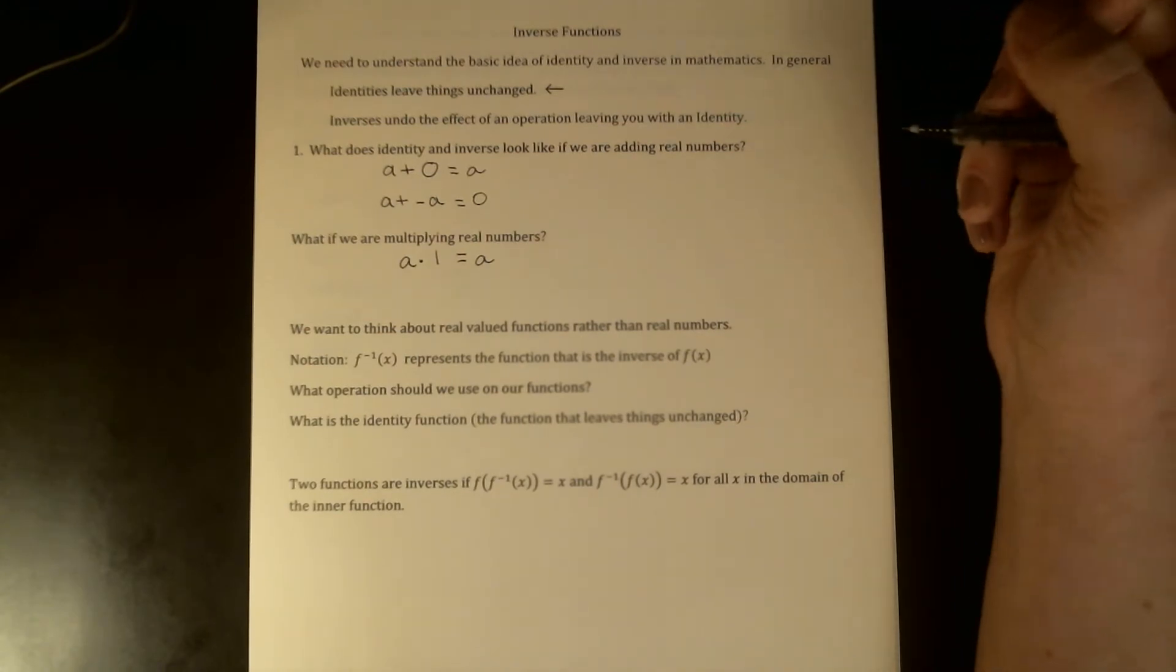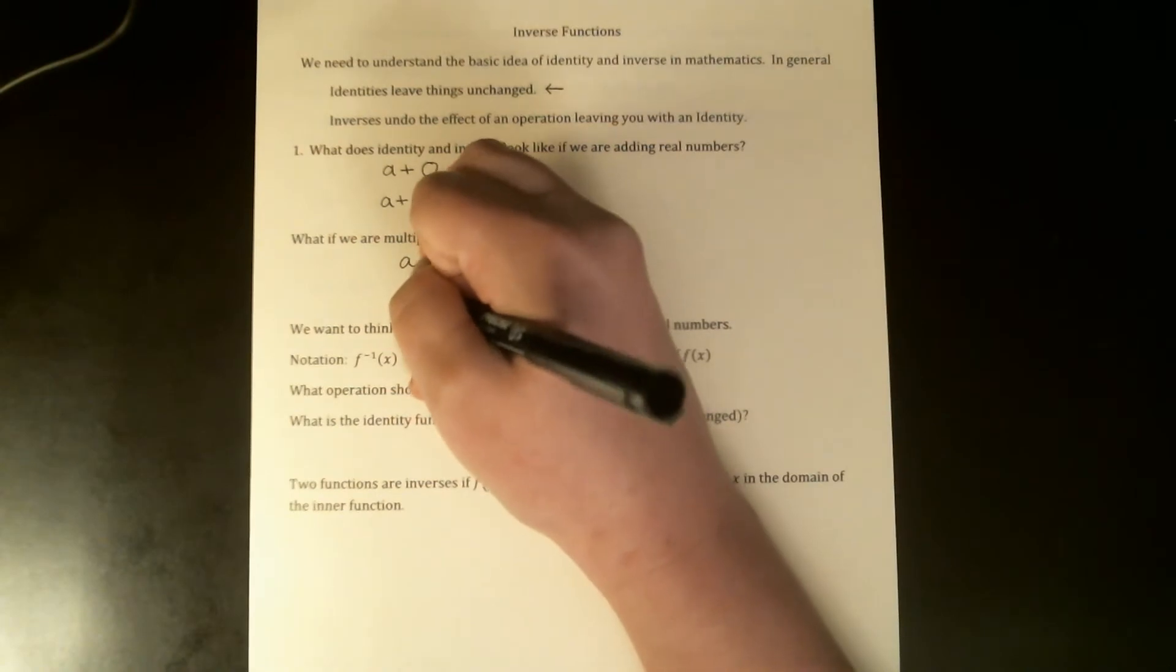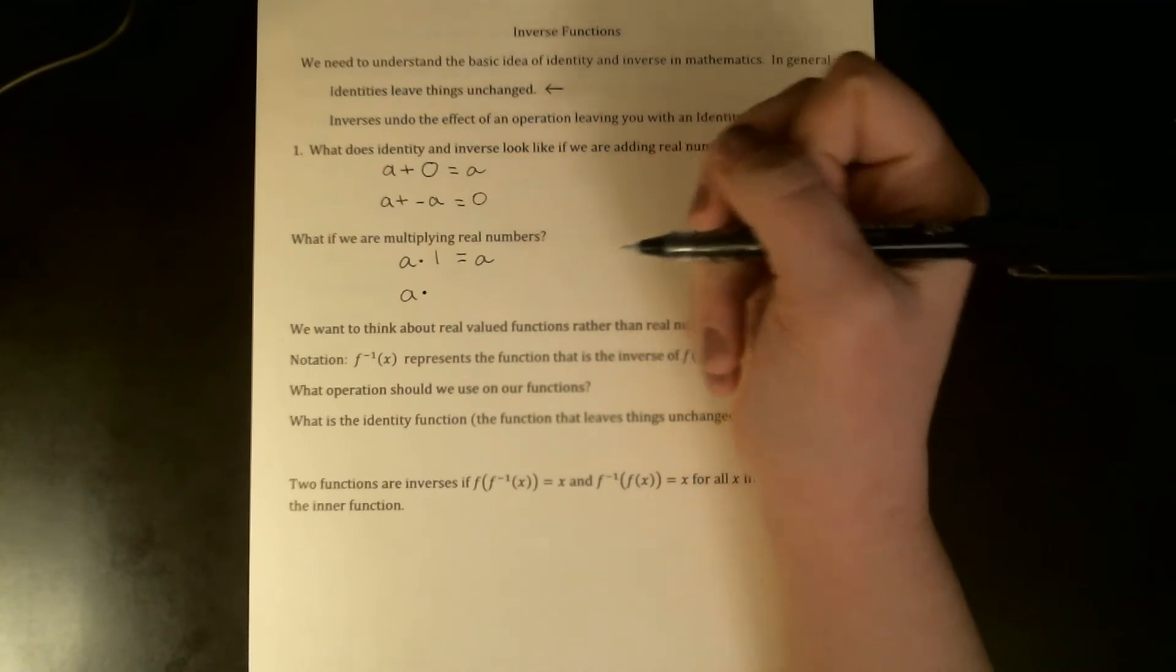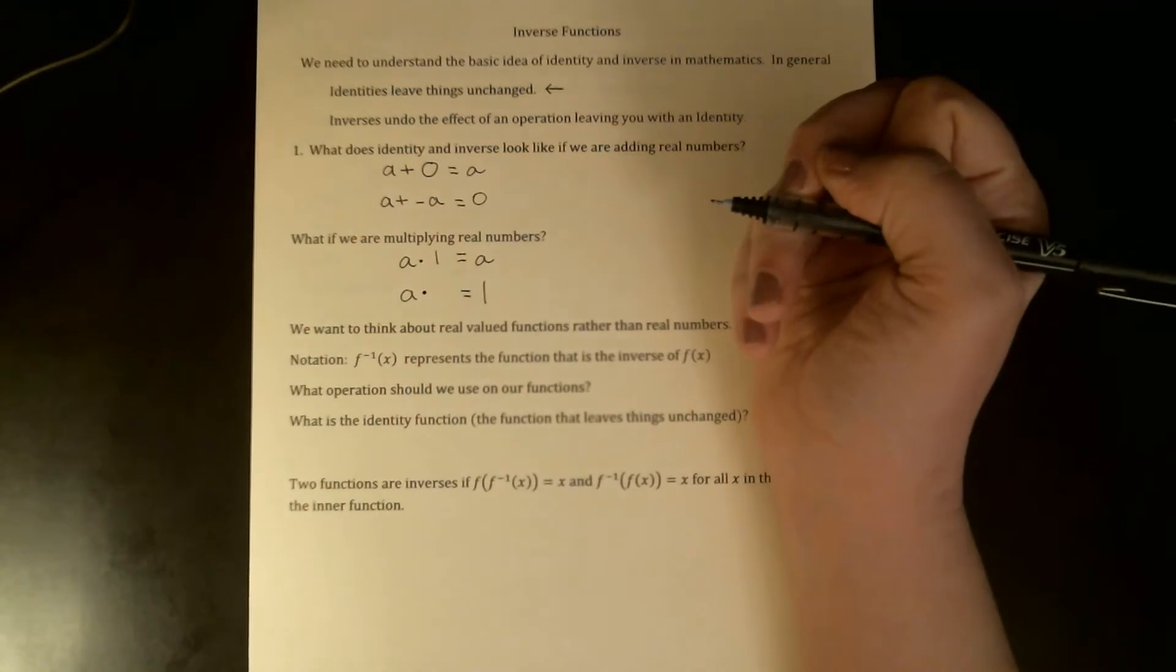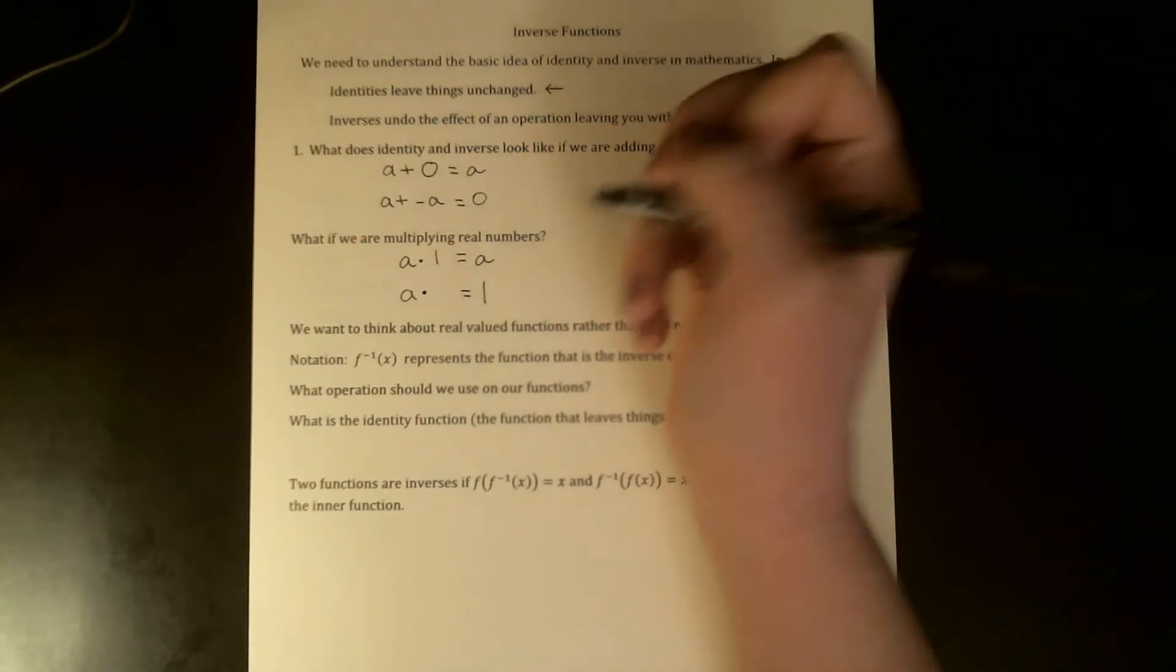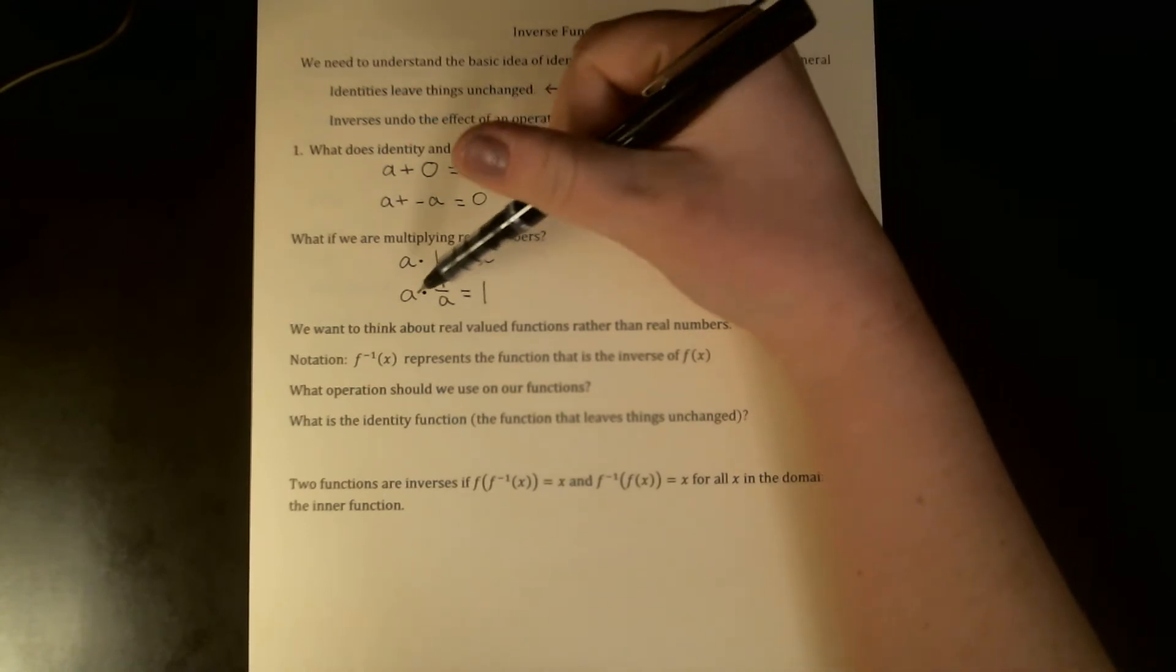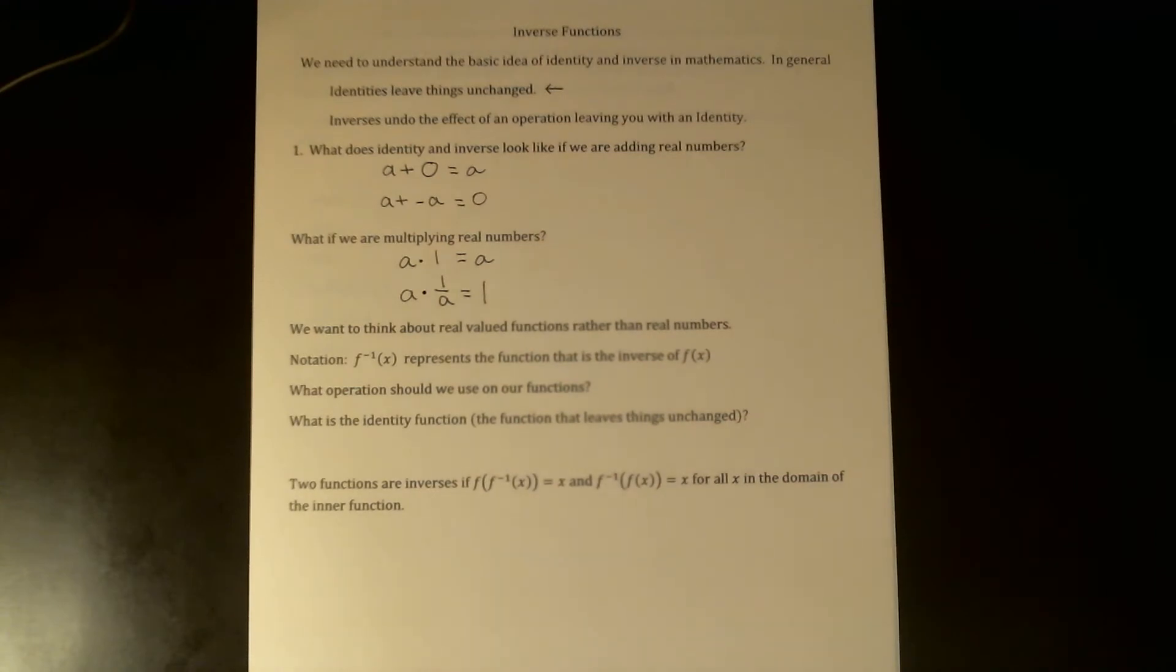Now that we've identified our identity, we should be able to pick out what inverses look like when we're multiplying real numbers. The question becomes: what can I multiply a number by that will undo the effect of the multiplication and get me back to one, my identity? The answer is reciprocal. If you add things with opposite signs, they wipe each other out and get you back to zero. If you multiply reciprocals, they wipe each other out and get you back to our identity one.